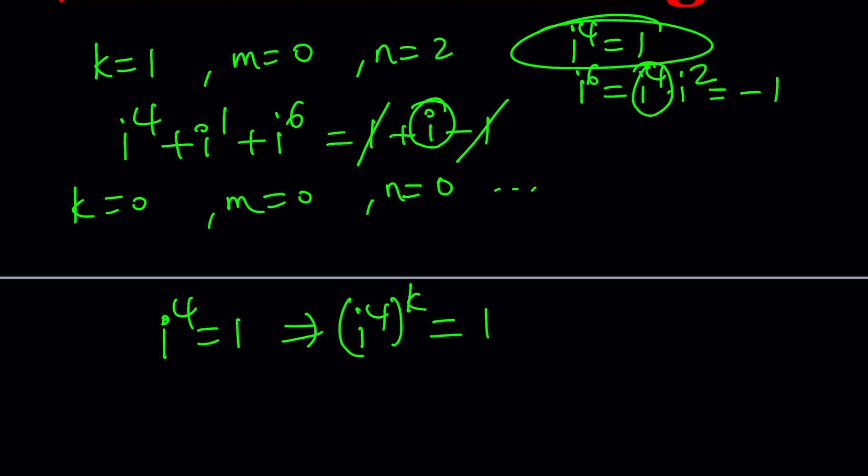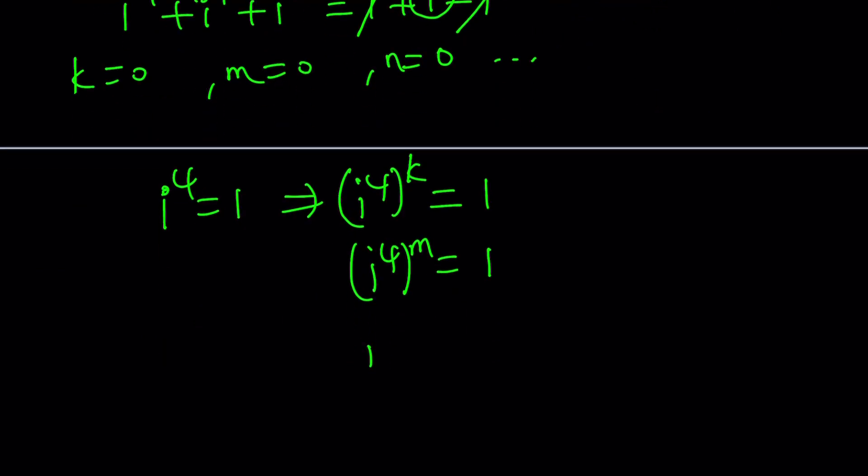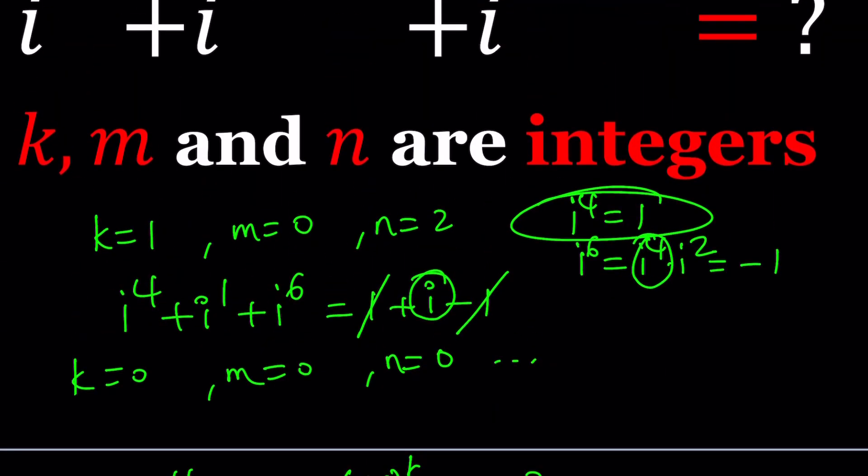Or if you do m, it's going to be the same thing. If you use another variable, it's always going to be the same. It doesn't matter. In other words, i to the power any 4 times variable is always 1. And x represents any integer, right? So how could we use this property?